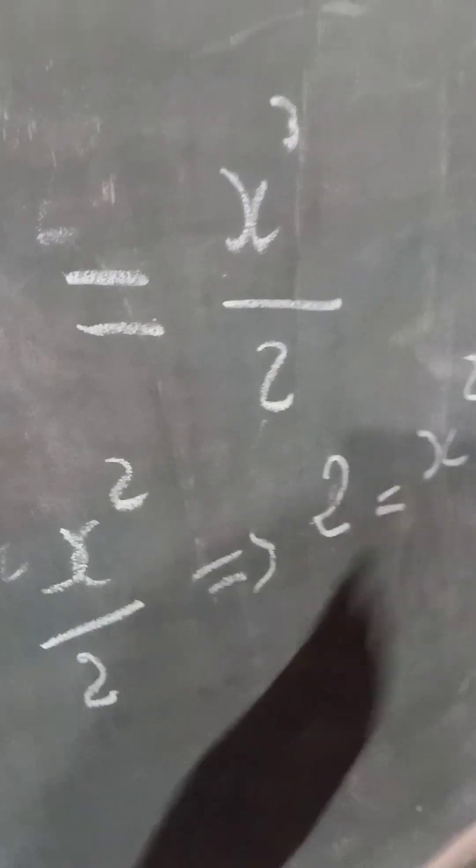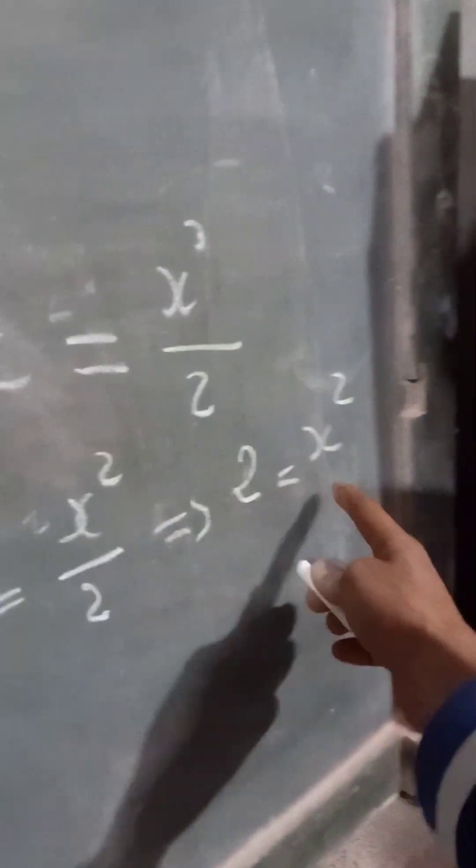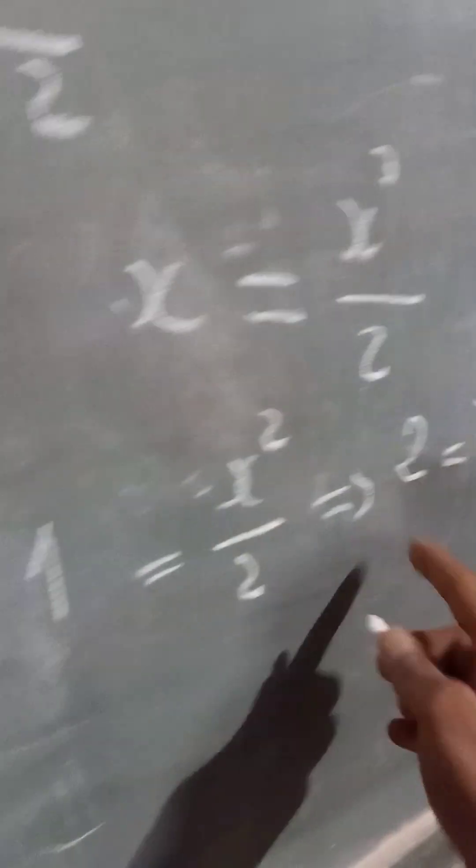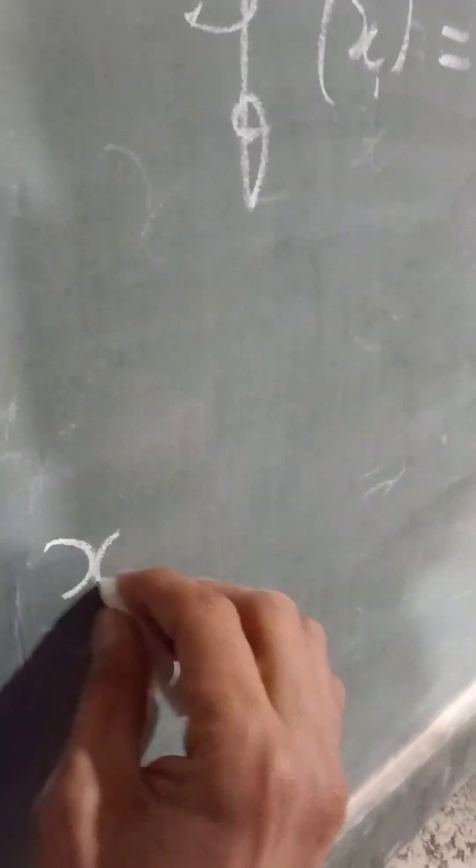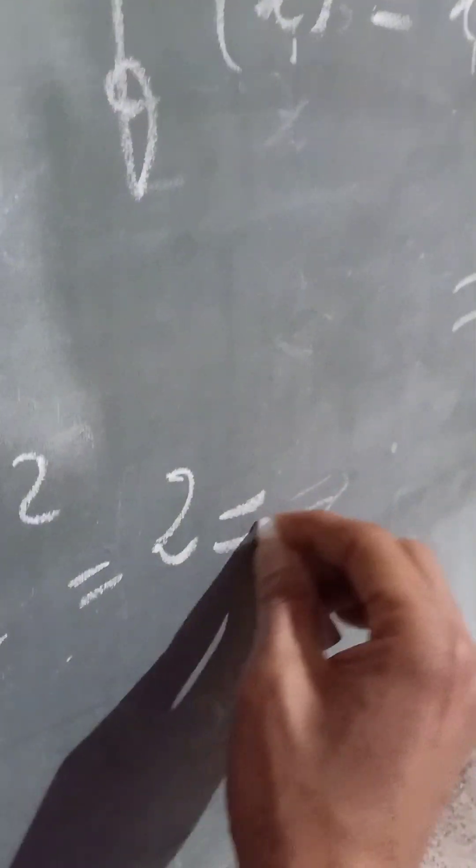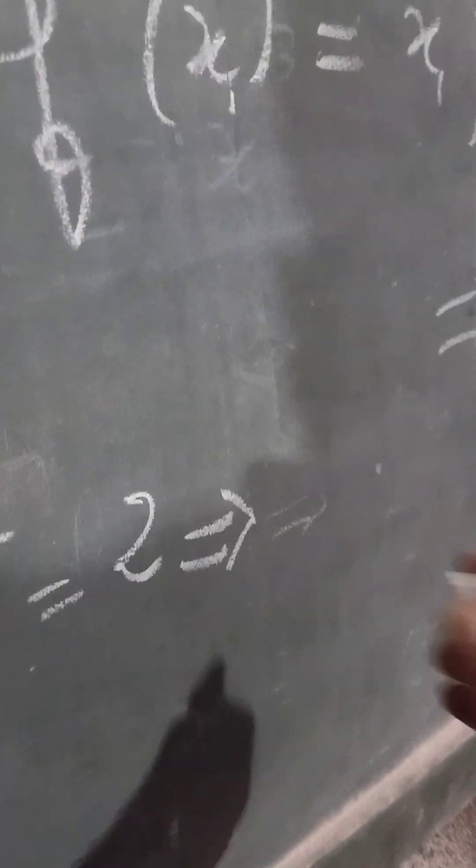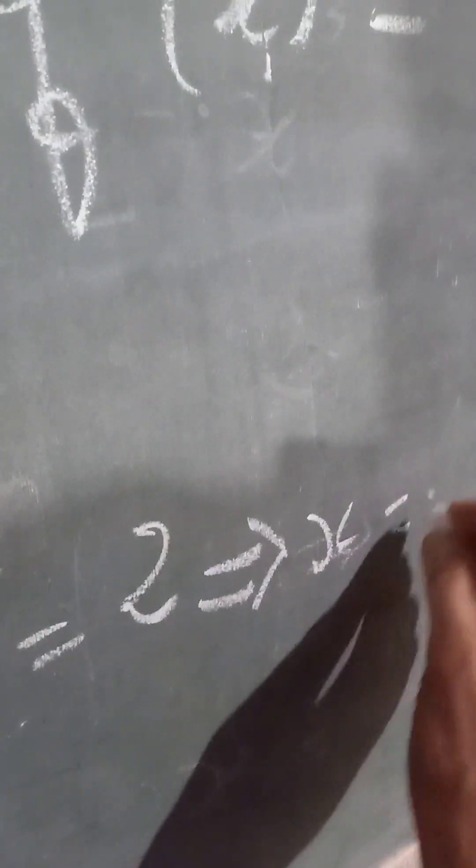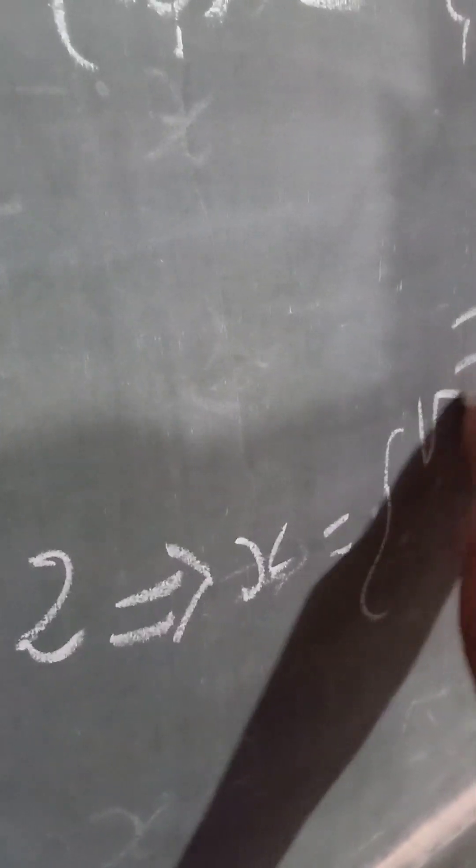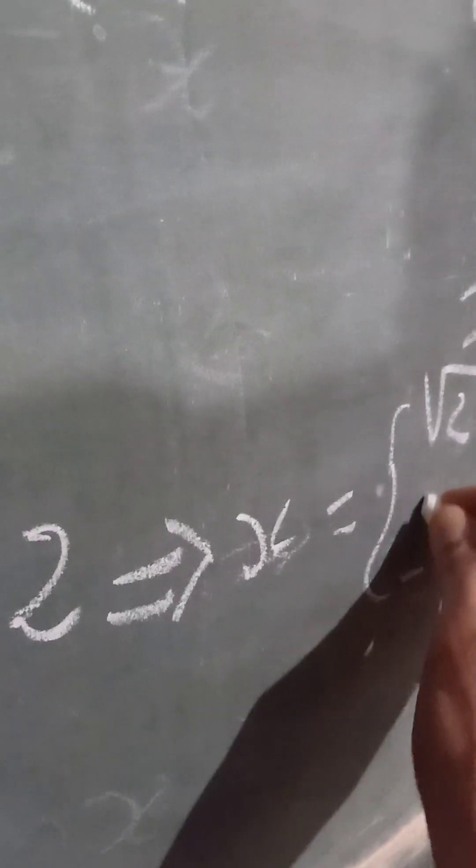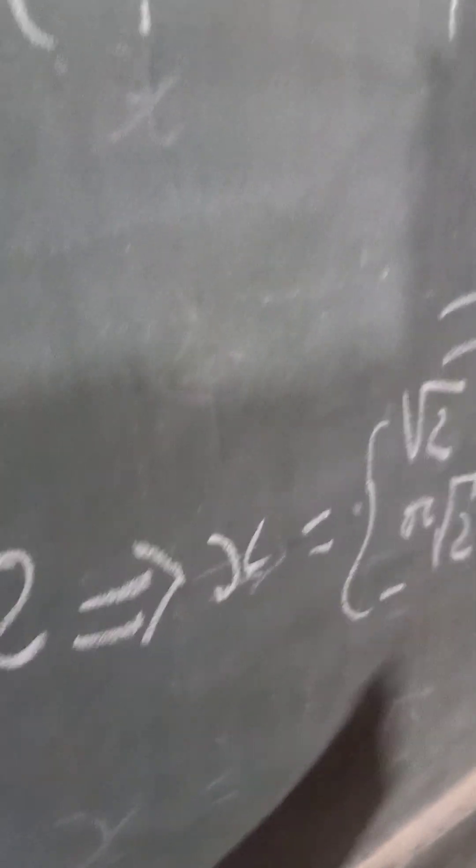So it equals x to the power of 2. So x to the power of 2 equals 2. It's simple and it does totally make sense for me. Which means that x equals the square root of 2 or minus square root of 2.